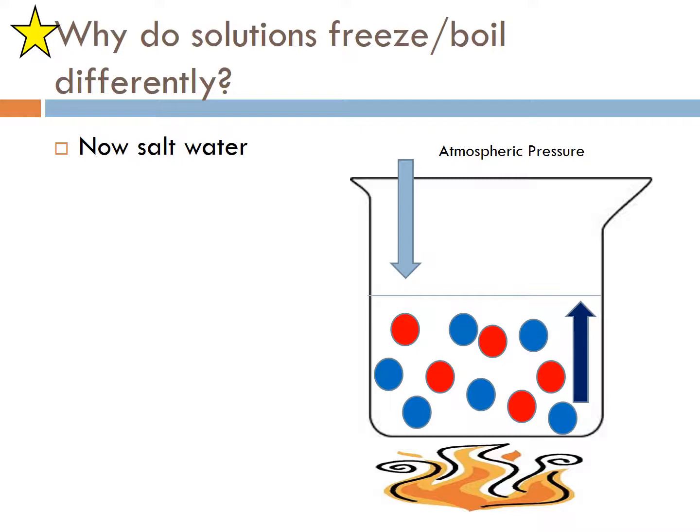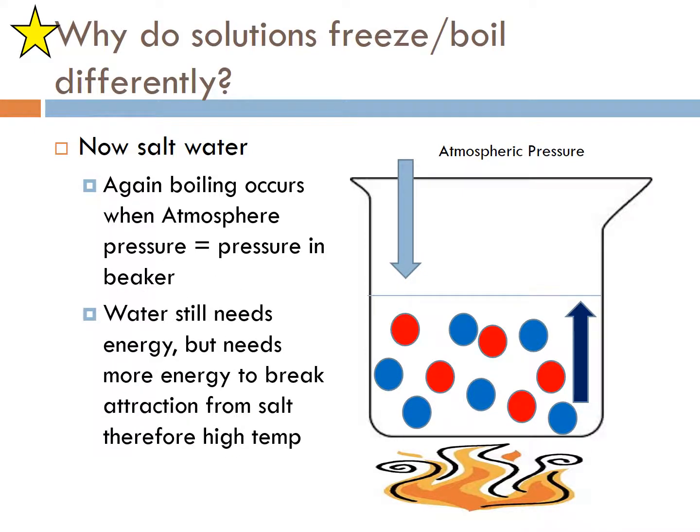Now if we have salt water, salt boils at a very high temperature so it's not going to escape into steam. But what happens here? The same thing occurs: the boiling point has to reach the pressure in the beaker compared to the atmospheric pressure. Water still needs energy to break the attractive force, so then you need more temperature to get away from that salt to break apart and escape into steam. It's kind of like a blocker in football. It has to get past the blocker, so it needs more energy to escape into steam. It's getting blocked, and then it needs enough energy to escape.